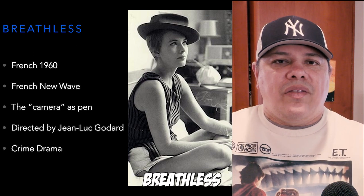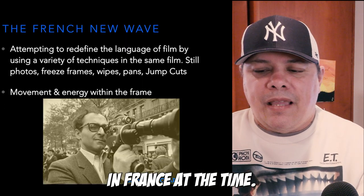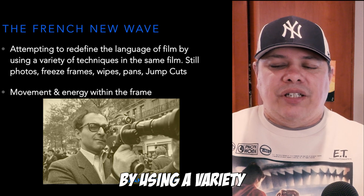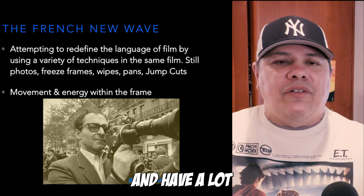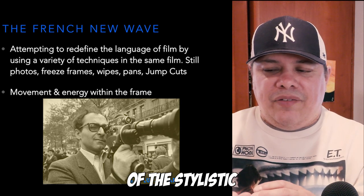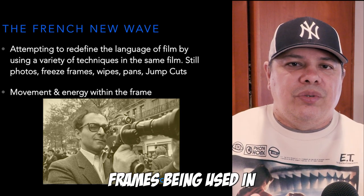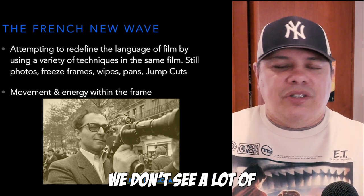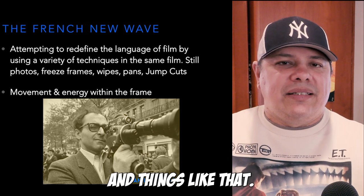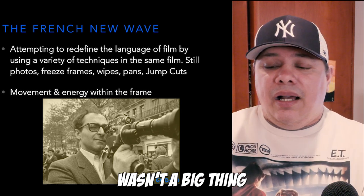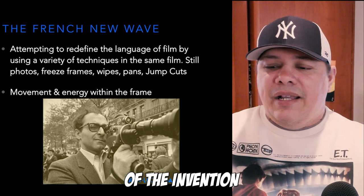The film Breathless is a crime drama, which is a little different from the kind of films being made in France at the time. The French New Wave attempted to redefine the language of film by using a variety of techniques in the same film: still photography, freeze frames, wipes, pans, jump cuts, and a lot of movement and energy within each frame. Back then, we didn't see a lot of freeze frames or still photography in motion picture cinema. The jump cut was being used more frequently, but back in the 1960s, this was kind of the invention of the jump cut.